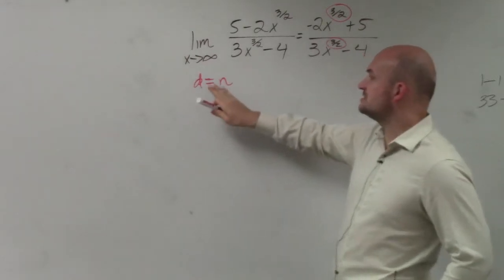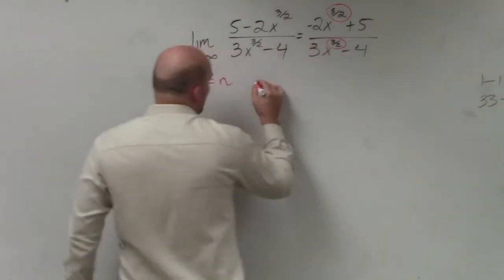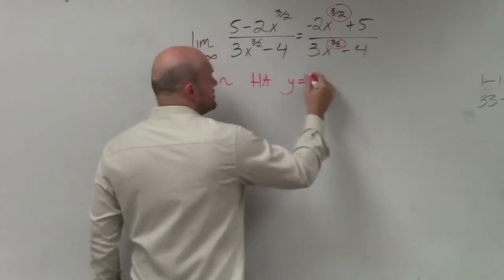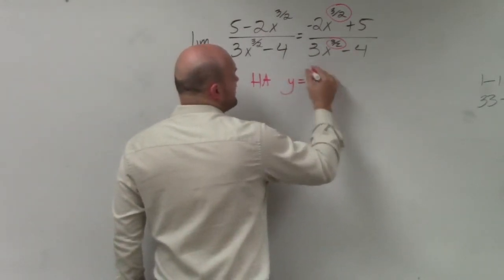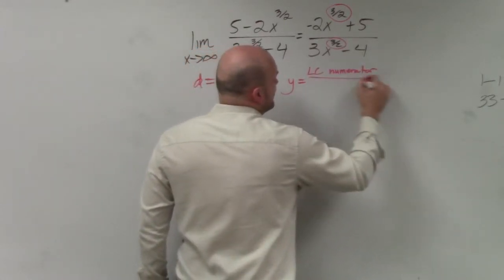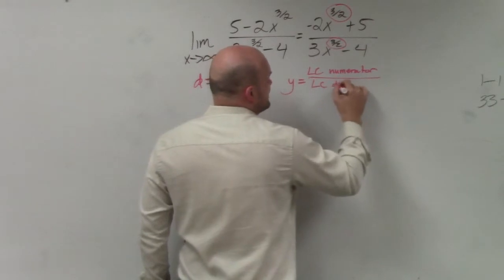But as long as the degree in the denominator is equal to the numerator, then the horizontal asymptote is y equals the leading coefficient of the numerator over the leading coefficient of the denominator.